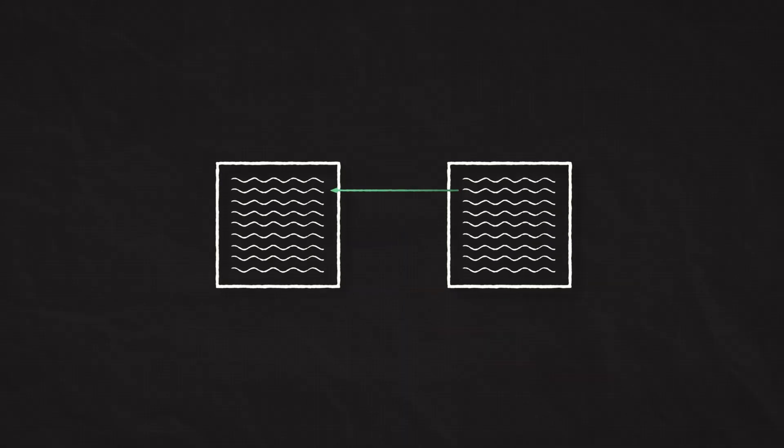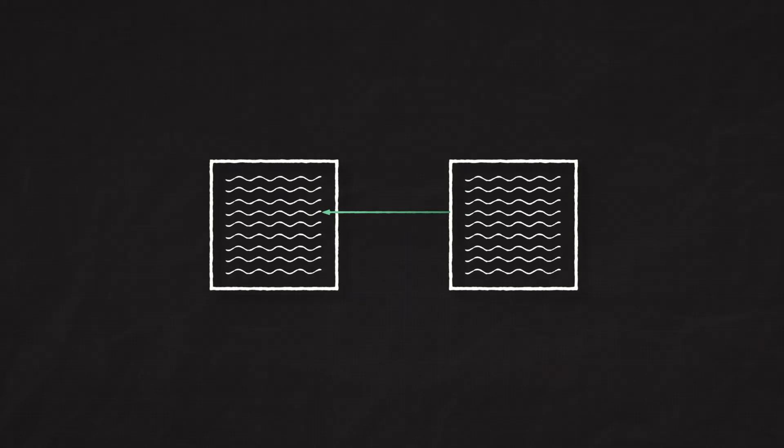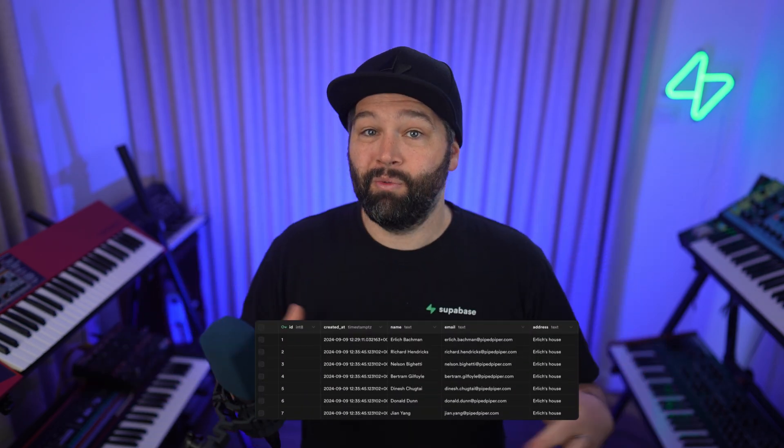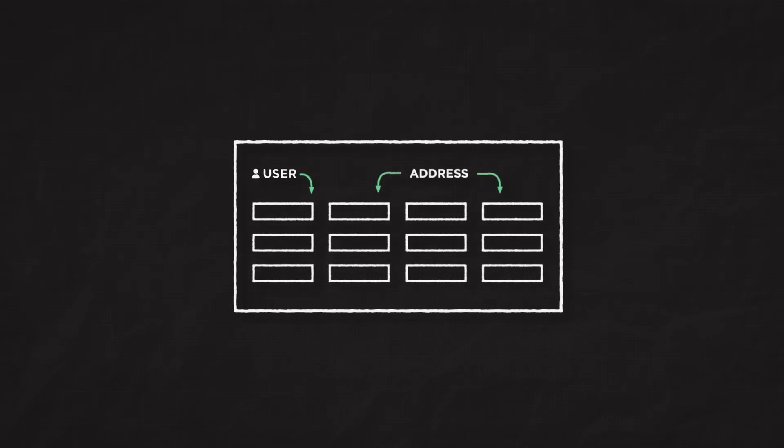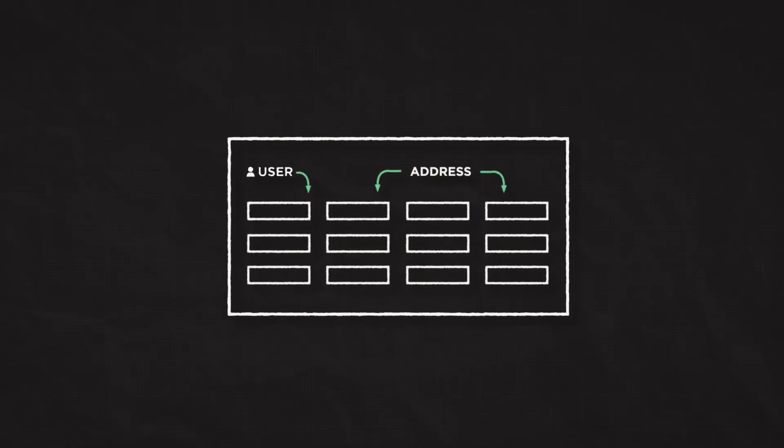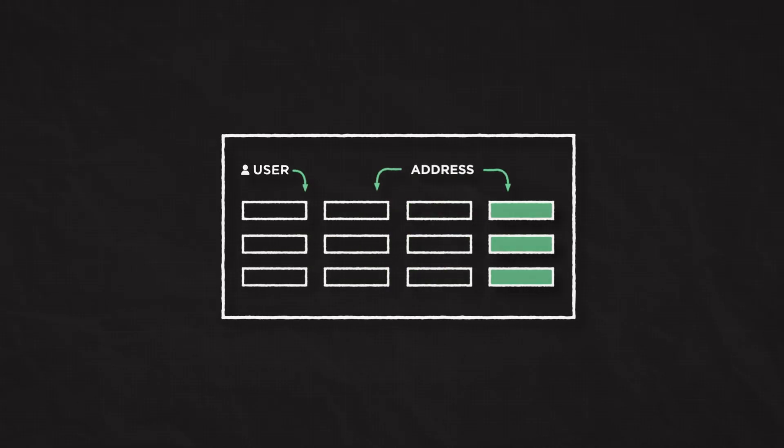Let's get into number one, which is a one-to-one relationship. This is where you have one table that has a relationship to another table, but each row in the first table can only reference a single row in the other and vice versa. This might be useful when you have a really wide table with a bunch of columns — for example, a user table where address is broken up across multiple columns: street number, street name, state, etc.